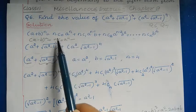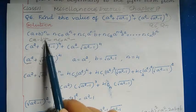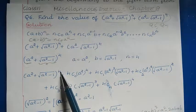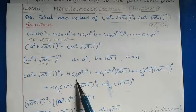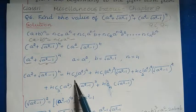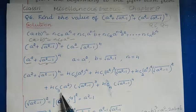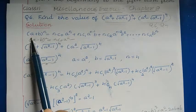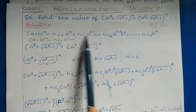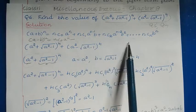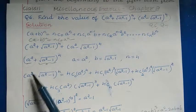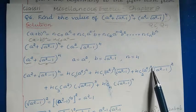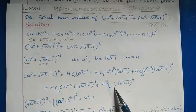In the binomial theorem for (a + b)ⁿ, we start from nC0 up to nCn. Here n is equal to 4, so we go from 4C0, 4C1, 4C2, 4C3, up to 4C4. The first variable a² has powers starting from 4 and decreasing: a² to the power 4, then power 3, power 2, power 1, and a² to the power 0 which equals 1.